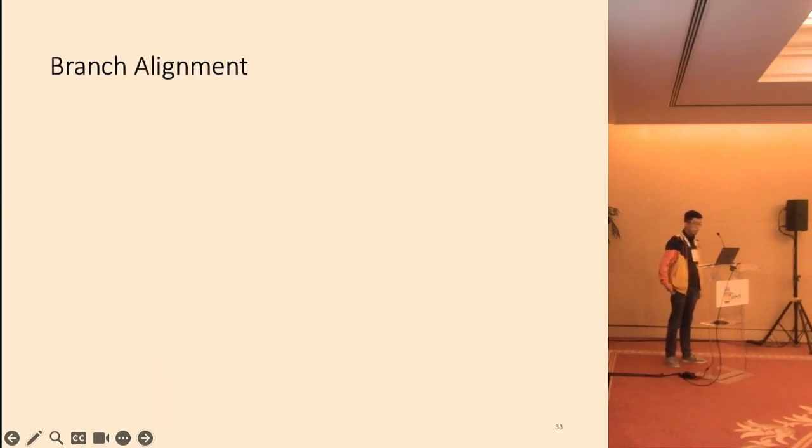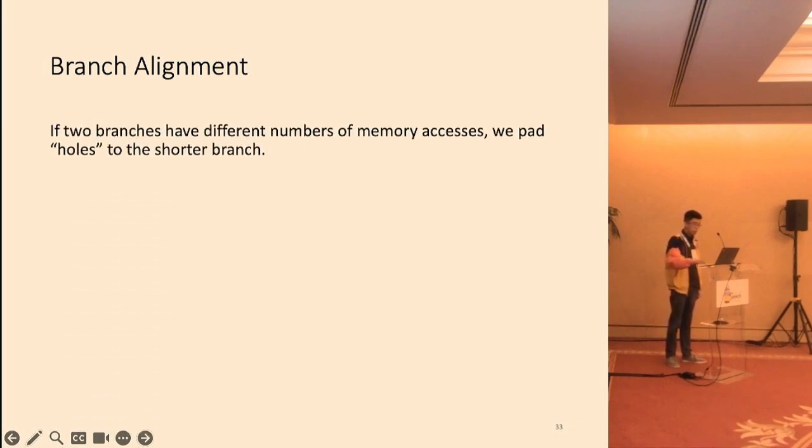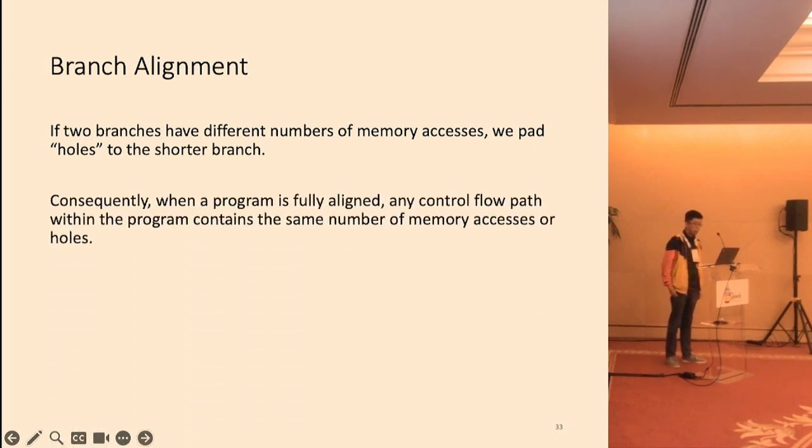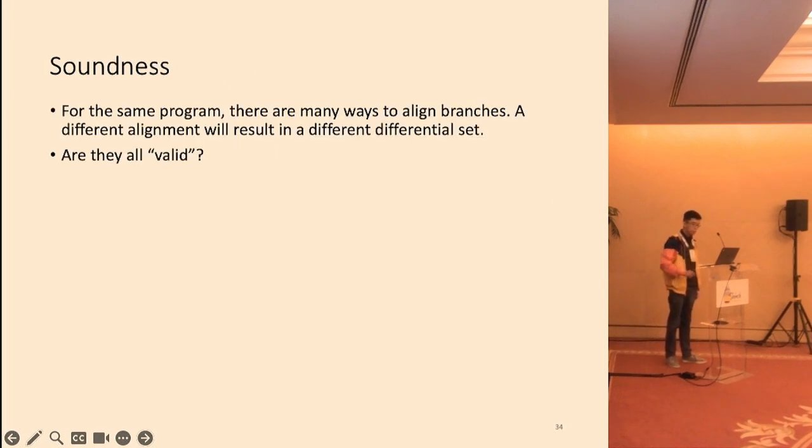I'm now going to discuss branch alignment. The idea is simple. If two branches have different number of memory accesses, we pad no-op memory access called holes to the shorter branch. This ensures that every pair of branches has the same number of memory accesses, and consequently, the program will produce traces of the same length.